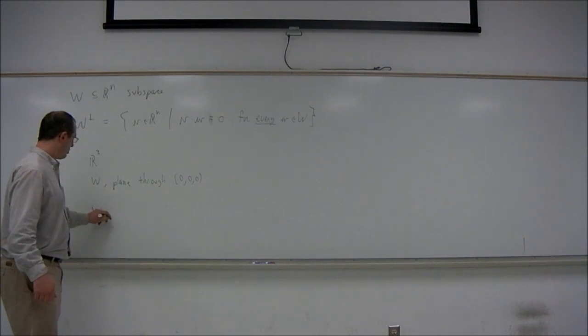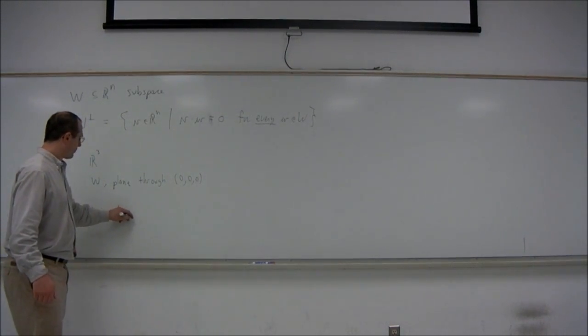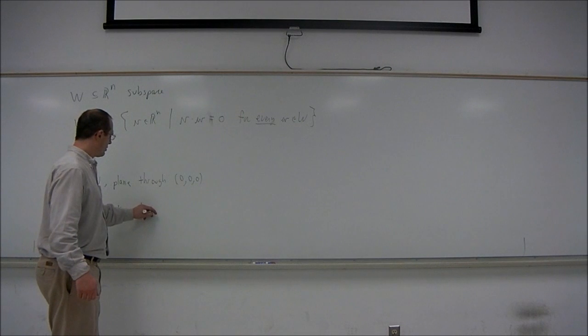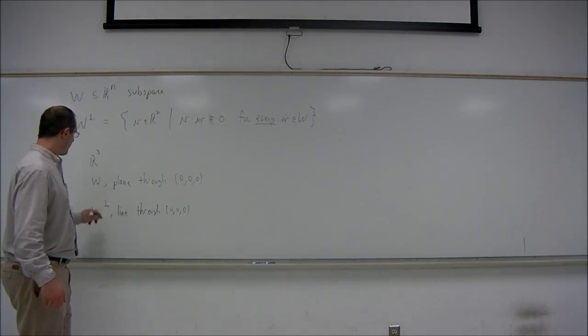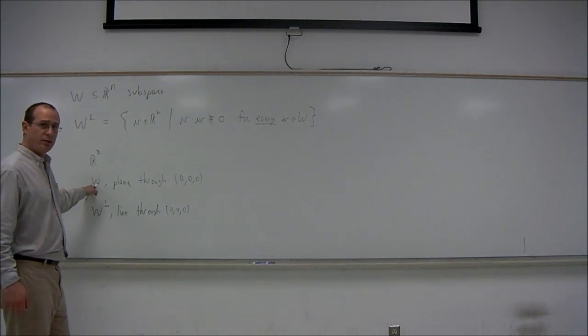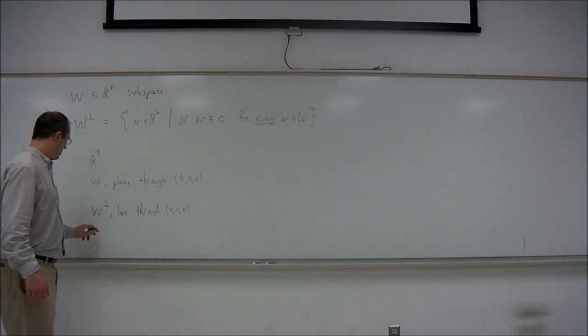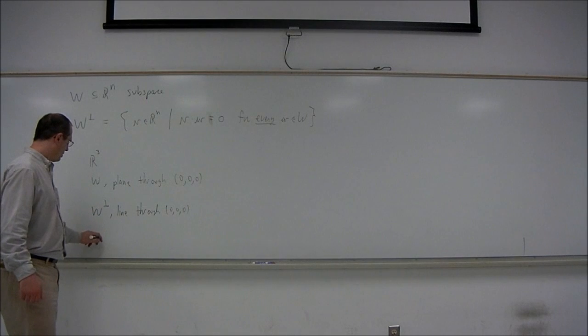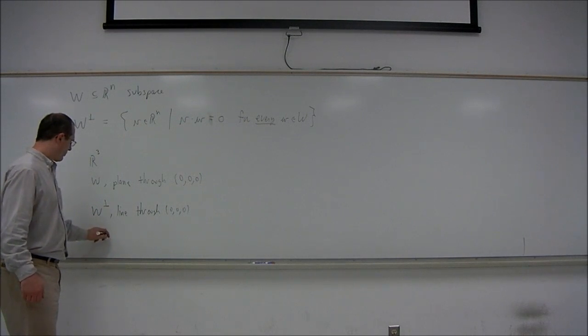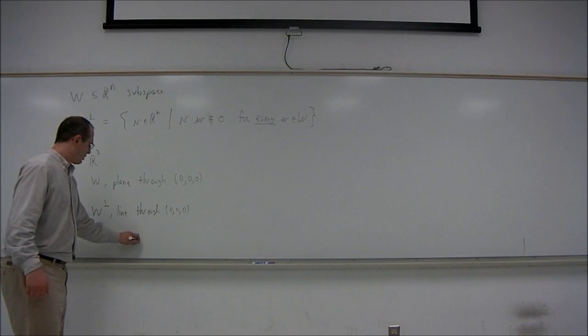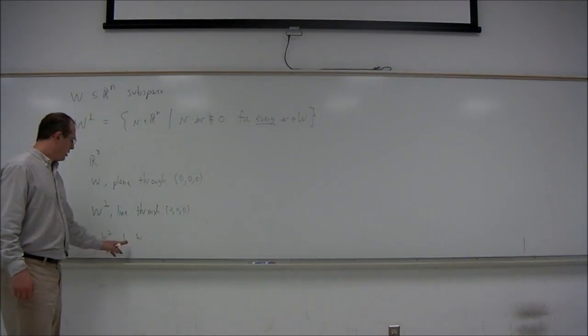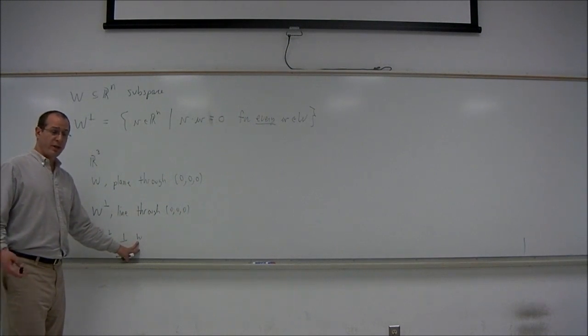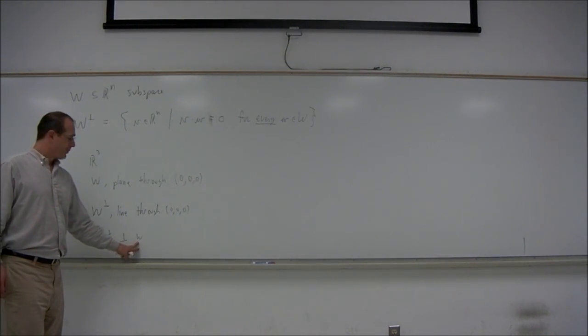W perp would be a line through the origin, perpendicular to the plane. So W perp would in some sense be perpendicular to W. Each vector in W perp would be orthogonal to each vector in W.